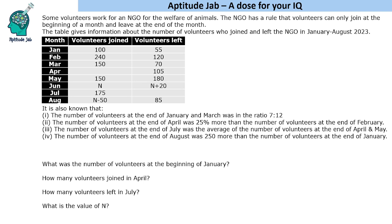This is a data table about some volunteers who work for an NGO for the welfare of animals. The NGO has a rule that volunteers can join only at the beginning of the month and leave at the end of the month. This table gives the number of volunteers who joined and left the NGO from January to August 2023.